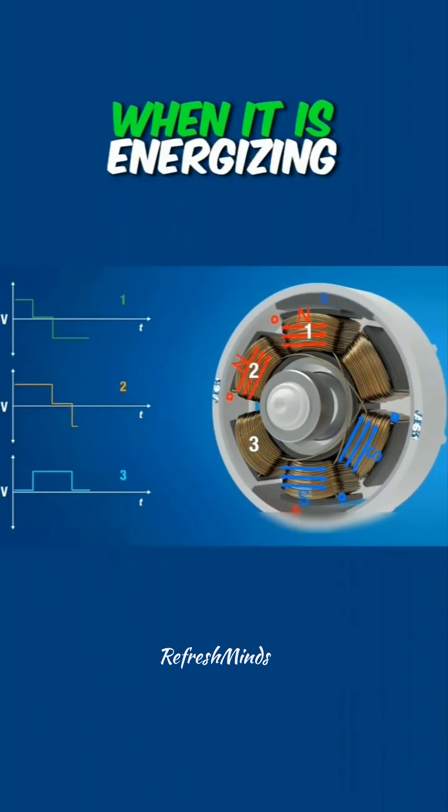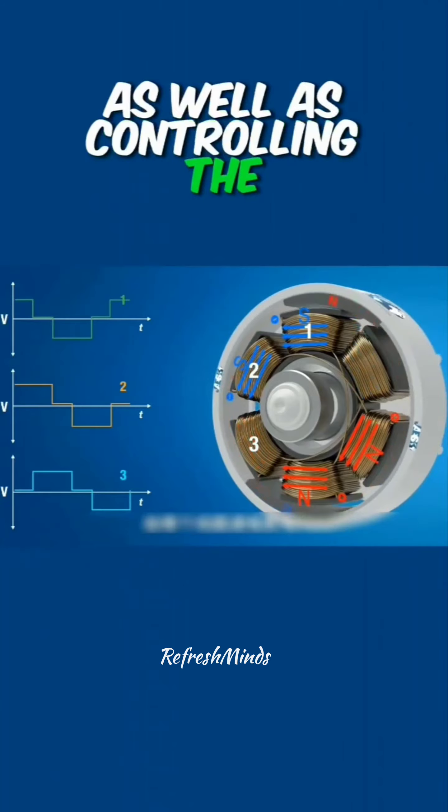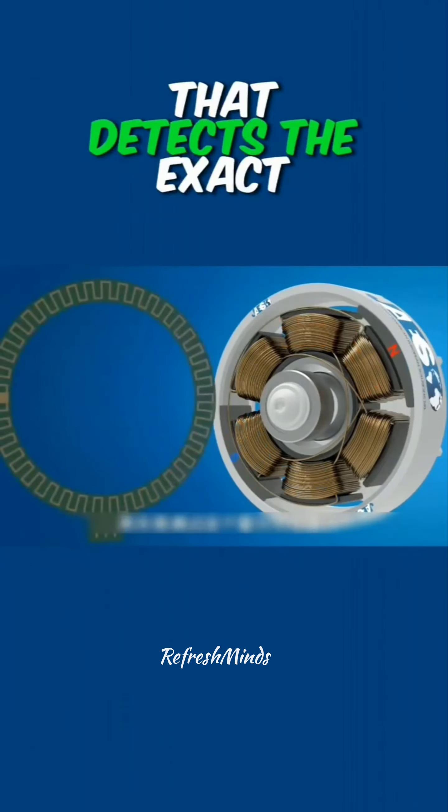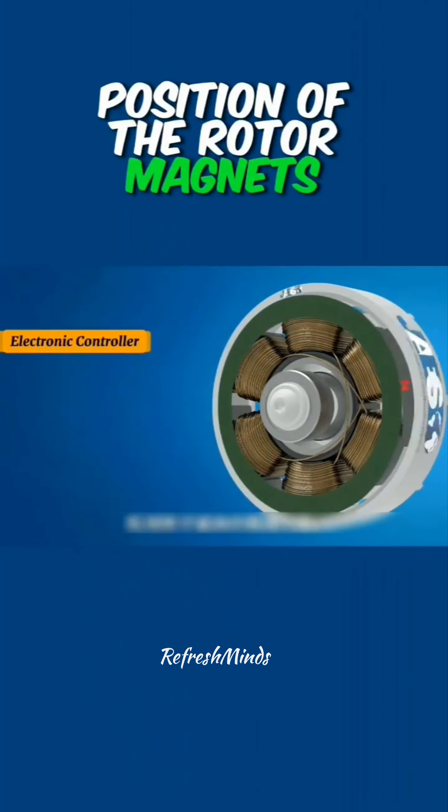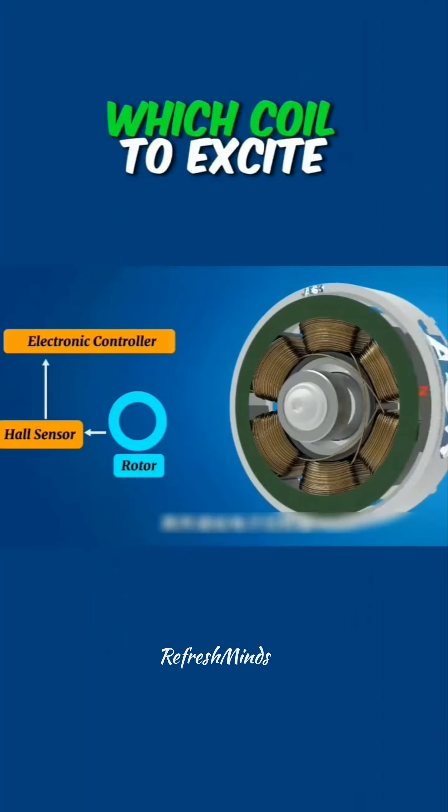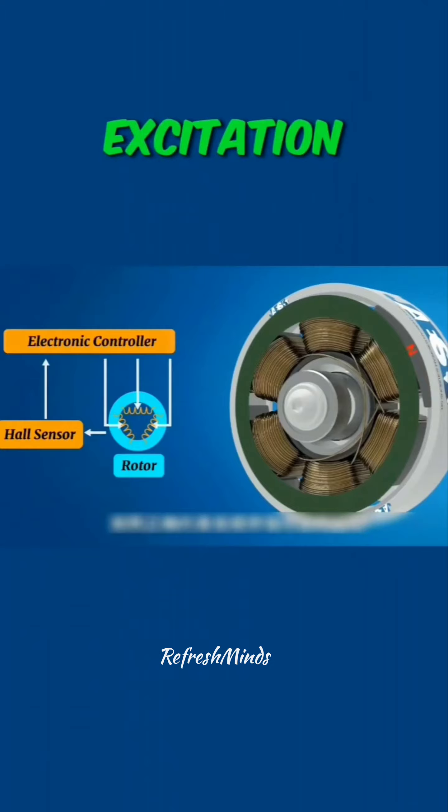But how does the motor know when it is energizing and de-energizing which coil as well as controlling the direction of the current? It's actually through this hall sensor that detects the exact position of the rotor magnets, which is then passed on to an electronic controller that determines which coil to excite to maintain rotational motion in the correct order of excitation.